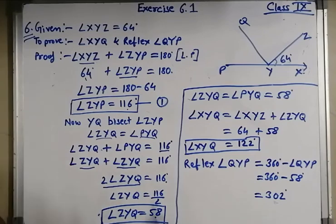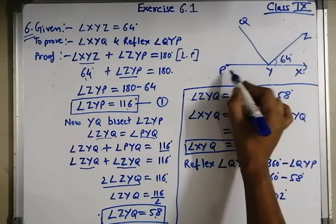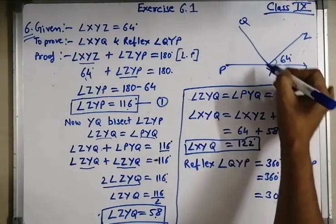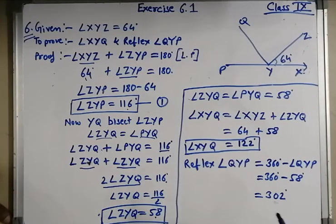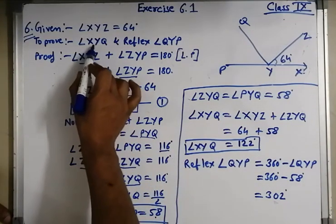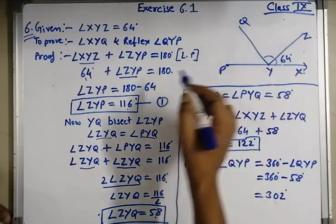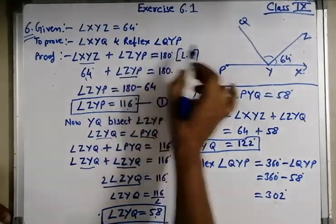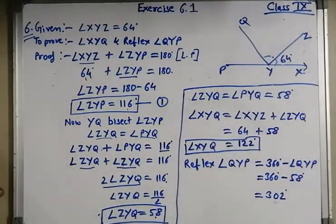Question number 6 — question is not here, only solution; you can read the question in your book. It is given that angle XYZ is equal to 64 degrees, and XY is produced to point P. YQ is a ray which bisects angle ZYP. We have to find angle XYQ and reflex angle QYP.